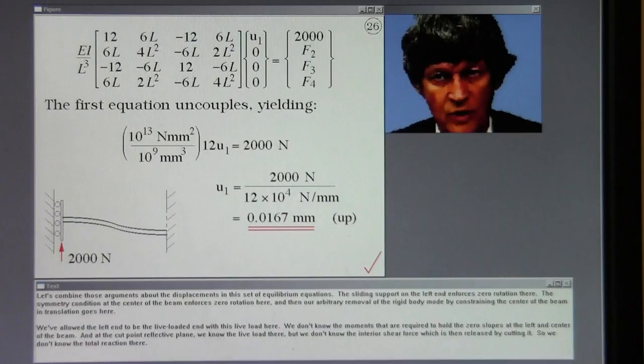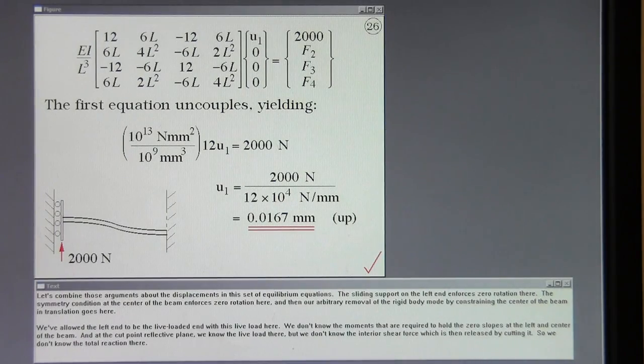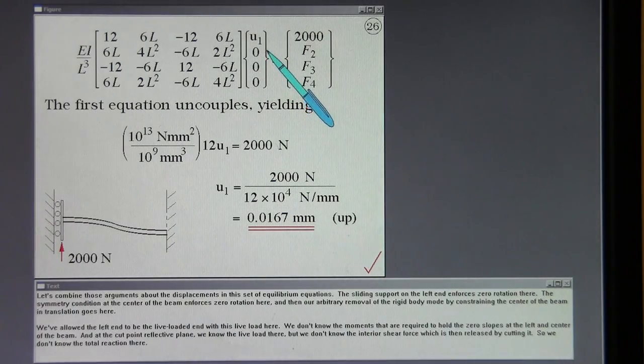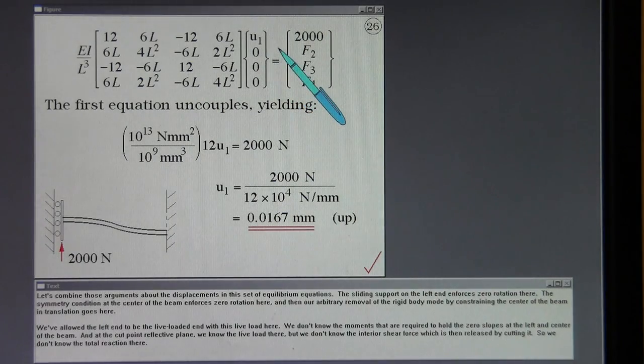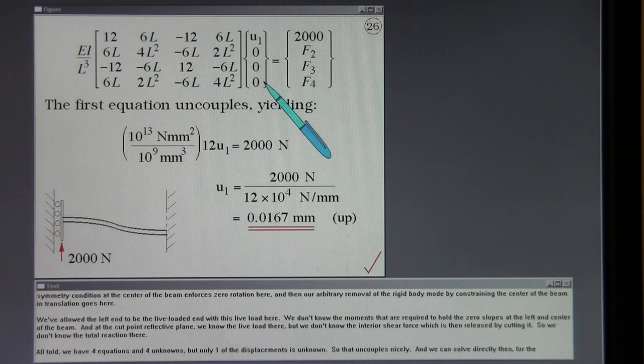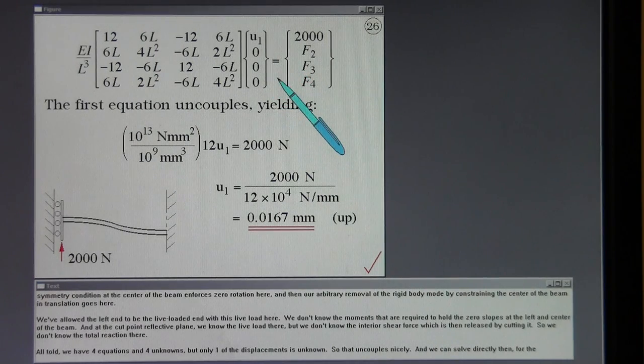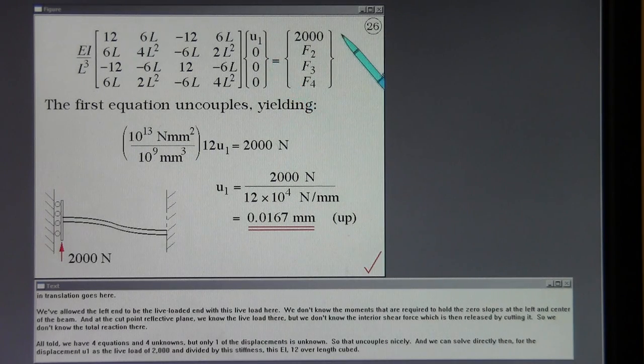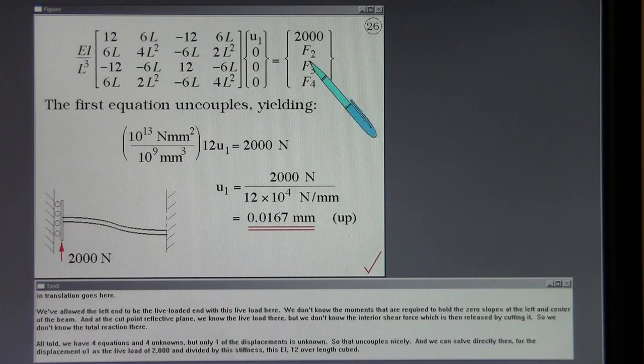Let's combine those arguments about the displacements in this set of equilibrium equations. The sliding support on the left end enforces zero rotation there. The symmetry condition at the center of the beam enforces zero rotation here. And then our arbitrary removal of the rigid body mode by constraining the center of the beam in translation goes here. We've allowed the left end to be the live loaded end with this live load here. We don't know the moments that are required to hold the zero slopes at the left and center of the beam.